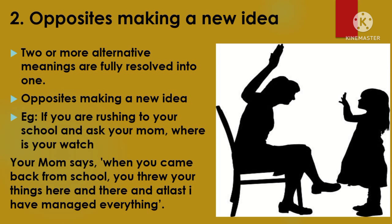The second type of ambiguity is when two or more alternative meanings are fully resolved into one — that is, opposites combining to make a new idea. For example, if you are rushing to school and you ask your mom where your watch is, she might say, 'When you came back from school, you threw your things here and there, and at last I managed everything.' The words 'here and there' are opposites, but together they make a new unified meaning.